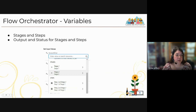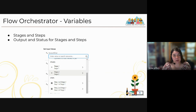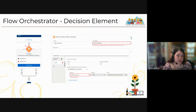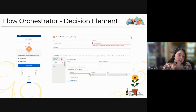Variables in Flow Orchestrator include stages, steps, and their outputs and statuses — available as you work through the flow — plus all variables from flow integrations or selected flows. A Decision element is also available to branch based on previous variables or record data, directing the orchestrator to different stages depending on conditions.